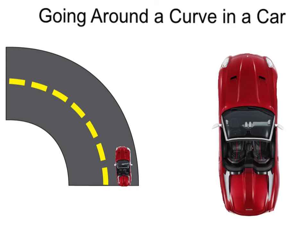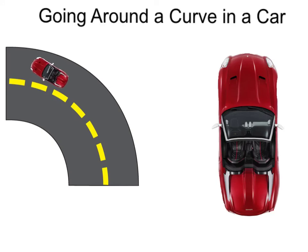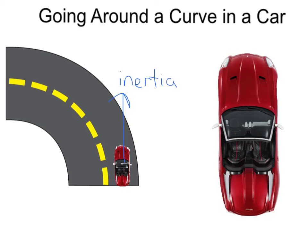Have you ever been a passenger in a car going around a curve and felt like the driver just pushed you into the passenger-side door? Let's think about what's going on in terms of centripetal force. As the car is going straight and starts to go around the curve, it's going from linear motion into circular motion. Your body wants to keep going straight forward — that's because of your body's inertia. When the car starts going around the curve, there must be a centripetal force pulling the car towards the center of the circle.